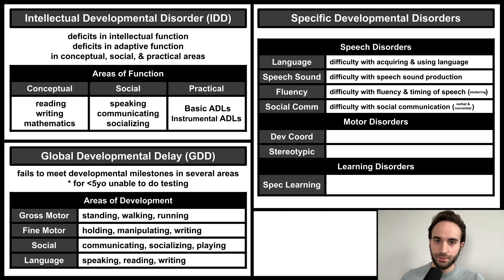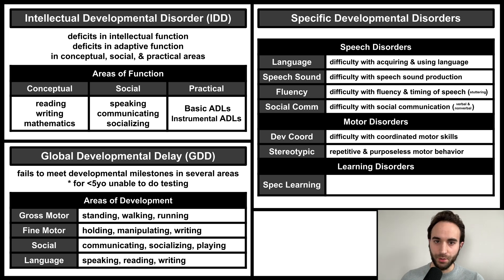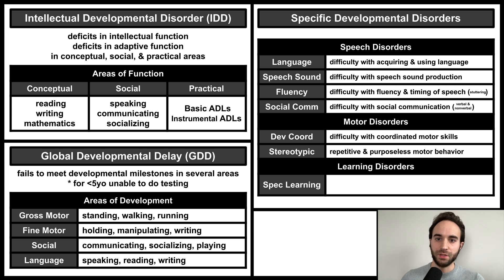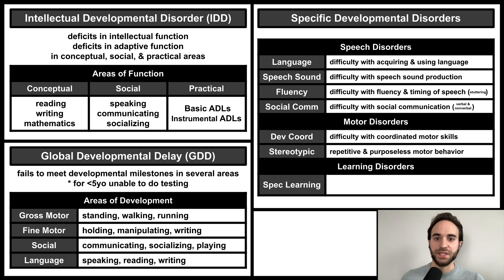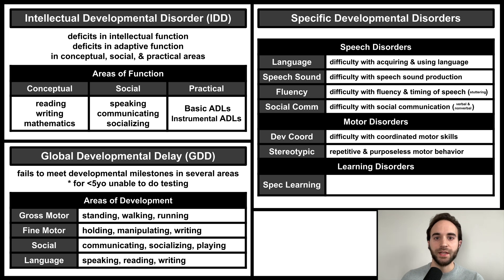Social communication disorder, also known as pragmatic communication disorder, involves specific problems with using both verbal and nonverbal social communication. Motor disorders include developmental coordination disorder, which involves difficulty with coordinated motor movements — for example, clumsiness such as dropping or bumping into things, or inaccuracy such as difficulties writing or playing sports. It also includes stereotypic movement disorder, which involves repetitive and purposeless motor behaviors such as hand-waving, body-rocking, head-banging, or hitting oneself.